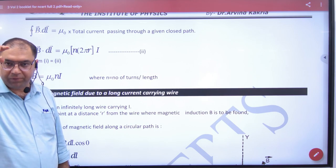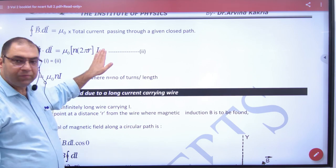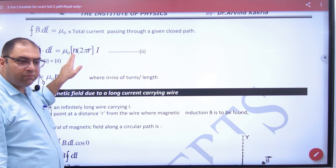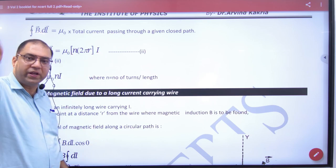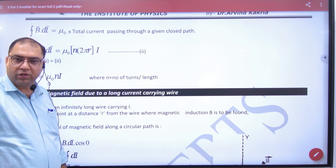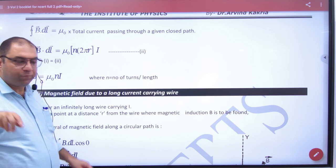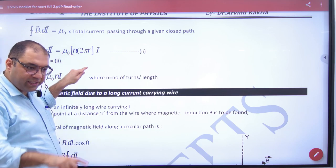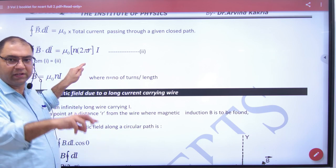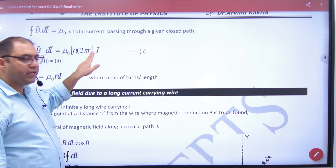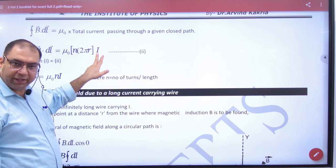So what is the current in one loop and what is the number of turns per unit length? Length 2πr multiply. Because the length of closed path is 2πr. So what is the number of turns per unit length into length? That's the number of turns. In one turn, current times total turns equals total current.